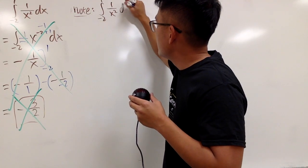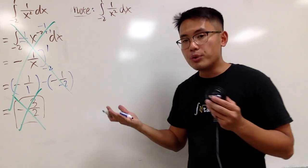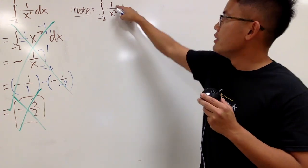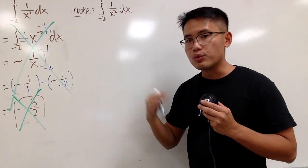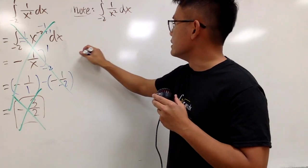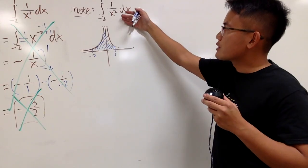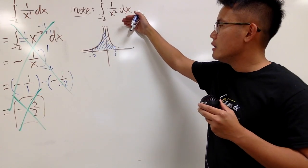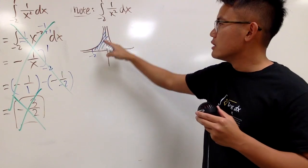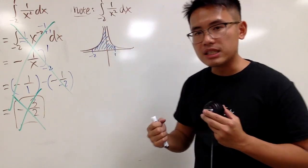When you have the integral from negative 2 to 1, 1 over x squared dx, we were pretty much trying to find the area under this curve from negative 2 to 1. So, you guys can see, if you draw a picture real quick, and you see, 1 over x squared is always positive. It's always above the x-axis.